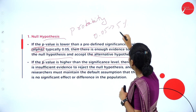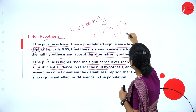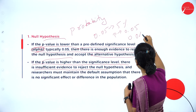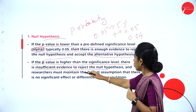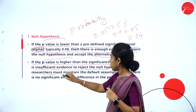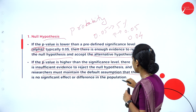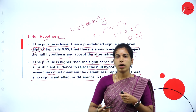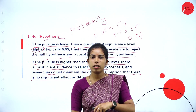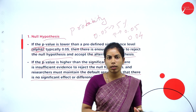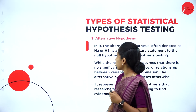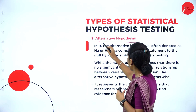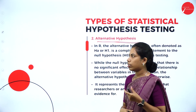If the p-value is 0.05 and we get 0.04, there is no rejection. The researcher must maintain the default assumption with no evidence at the significance level. This is how the null hypothesis can either be rejected or accepted. The alternative hypothesis — type 2 — is denoted as H1 or HA.